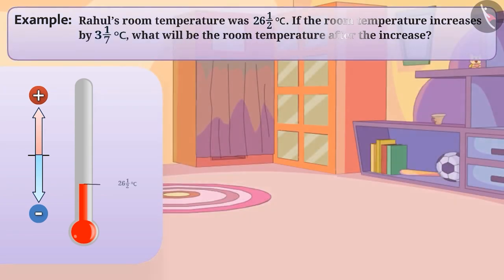Rahul's room temperature was 26, 1 by 2 degree Celsius. If the room temperature increases by 3, 1 by 7 degree Celsius, what will be the temperature of the room after the increase?